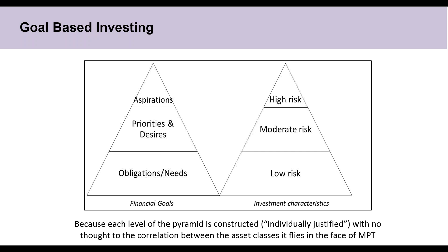The first framework is goal-based investing, which is really similar to behavioral portfolio theory covered in reading five. With BPT, the idea is that you build a portfolio layer by layer to meet different goals depending on your risk tolerances for those goals. Lower risk assets are designed to meet key spending needs, and as you move up the pyramid you take greater risks to meet less essential needs — there's an inverse relationship between risk tolerance and level of need. The problem with goal-based investing is that each level of the pyramid is individually justified without understanding how the different layers are correlated, which violates traditional finance's idea that assets are fungible and portfolios should be viewed holistically.